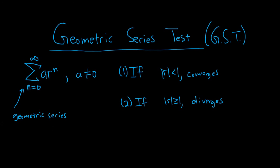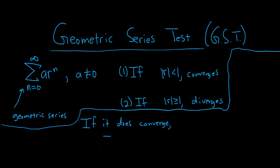Now in the case that it does converge, there is a formula that gives you the actual sum, which is really rare when it comes to infinite series. Most of the time we can't even begin to compute the sum. So if it does converge, then the sum is equal to the following: the sum of a times r to the n equals a over 1 minus r.